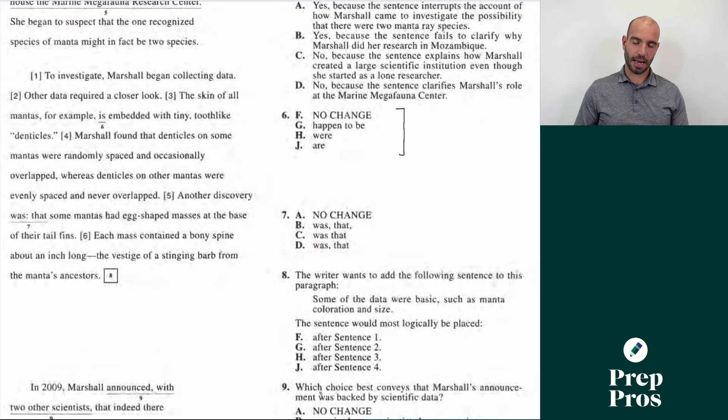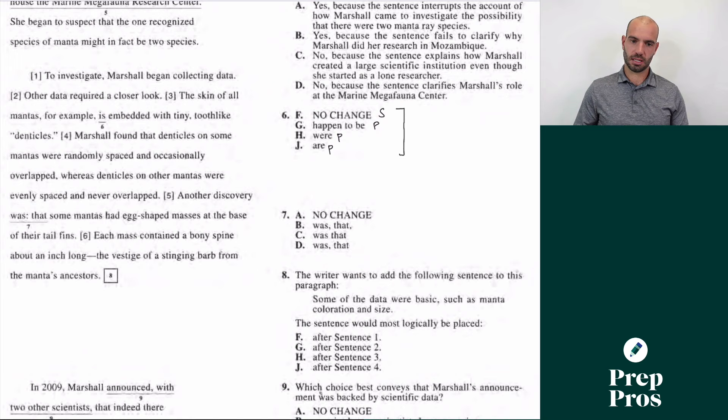"Is" is going to be singular — you can say "he is." "Happen" is plural, like "they happen," "they were," and "they are." Whichever one is different — here one is singular and three are plural — that's going to be your answer.